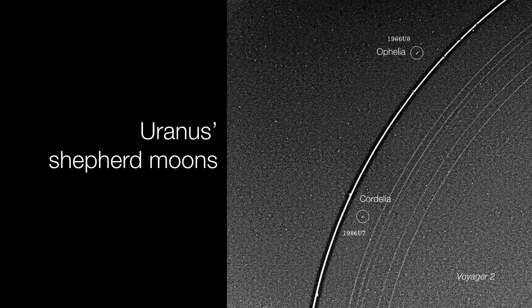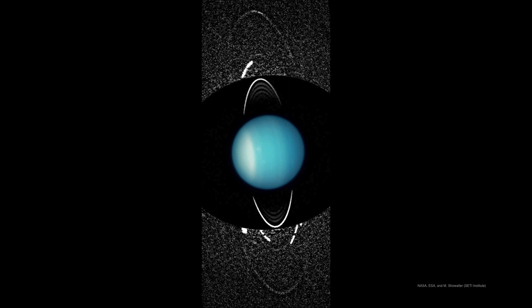Now these rings are also maintained by Shepherd moons. So here we have Ophelia and Cordelia. These two moons were discovered by Voyager 2 during its flyby in 1986. And additional rings have been discovered since then using the Hubble Space Telescope. So what we're looking at here is a composite image. The inner image of Uranus and its rings is basically a normal visible light image.